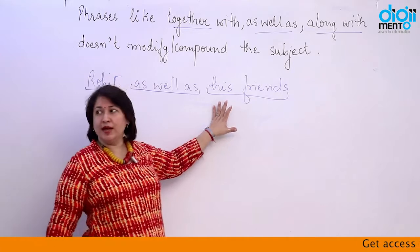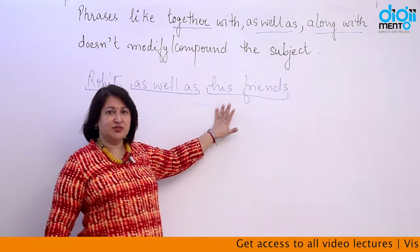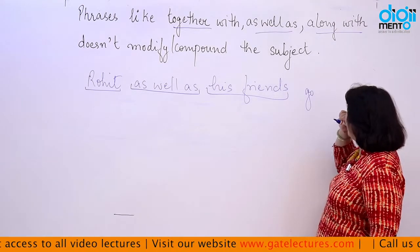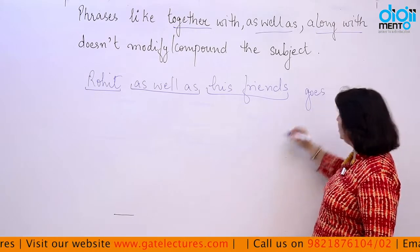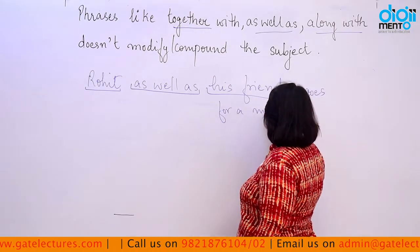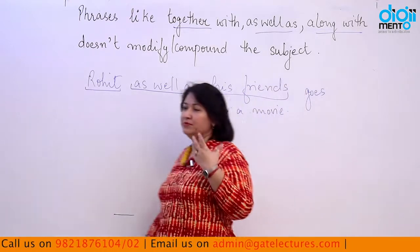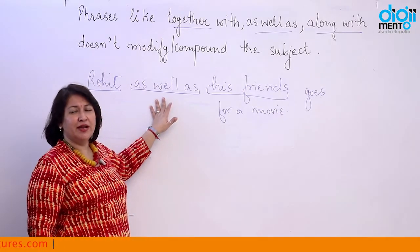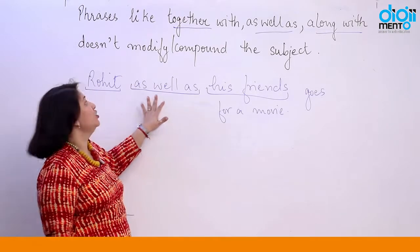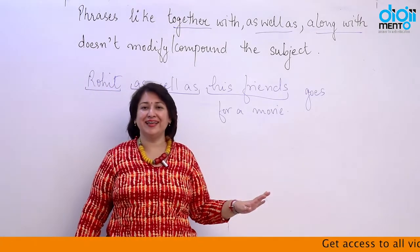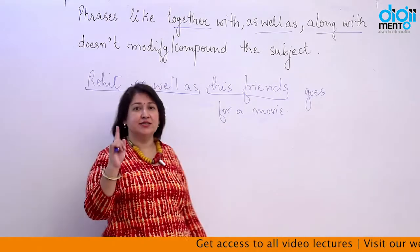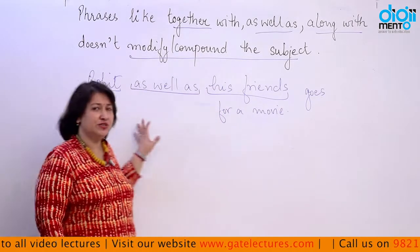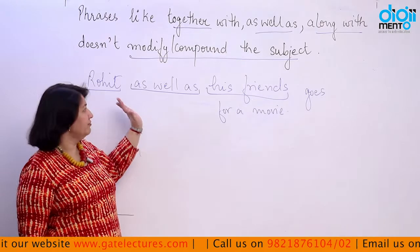In the sentence 'Rohit as well as his friends goes for a movie tonight,' the verb 'goes' is singular because Rohit is the first subject and it is singular. When subjects are joined with 'as well as,' 'together with,' or 'along with,' we consider them as one subject. The first subject determines the verb — if the first subject is singular, the verb stays singular.